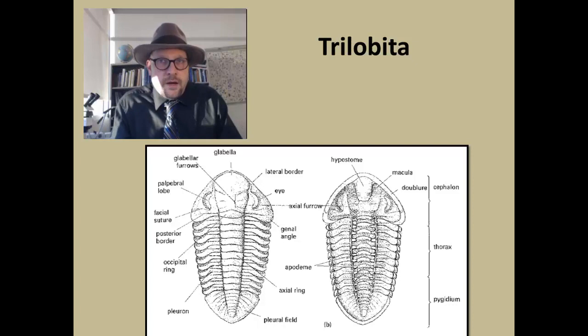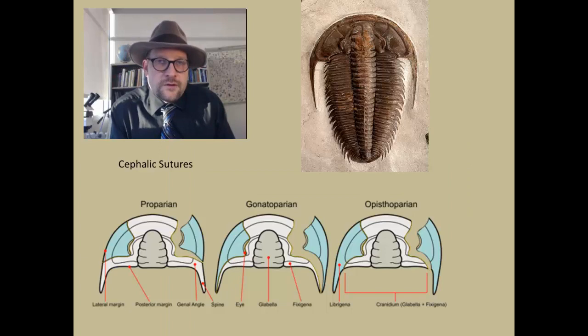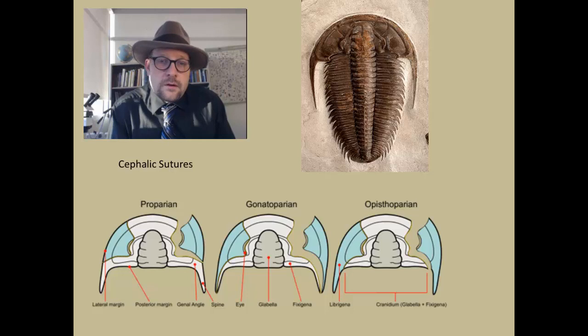On the ventral side, if you turn it over, on the bottom of the trilobite, is a hypostome—a small plate that held the mouth and the entrance to the gut tube. Now there is a whole bunch of different ways in which paleontologists can describe the anatomy of trilobites in many different conditions.